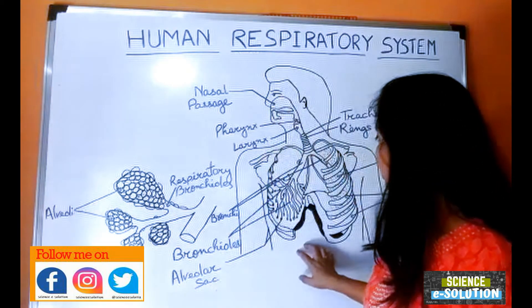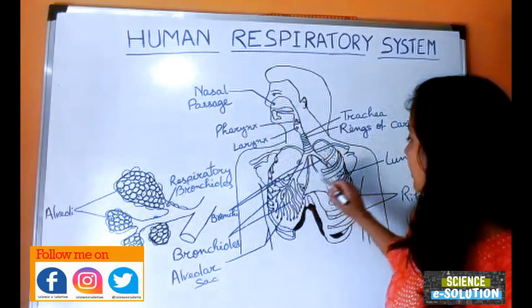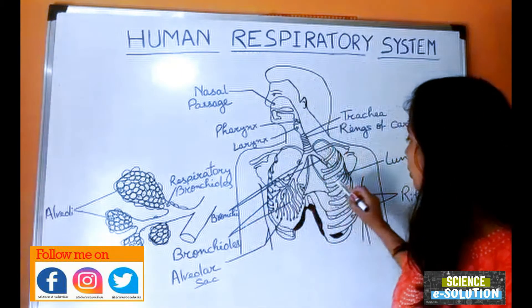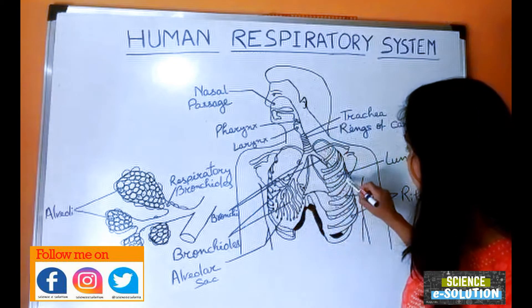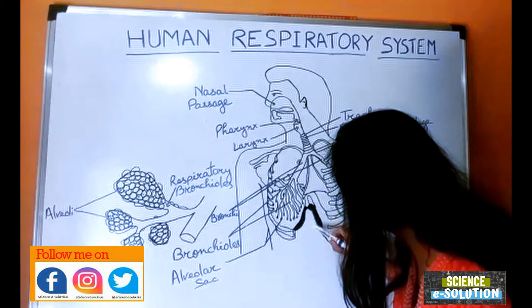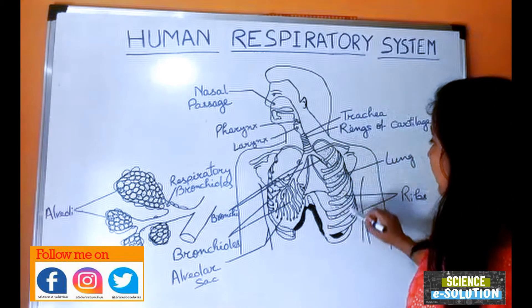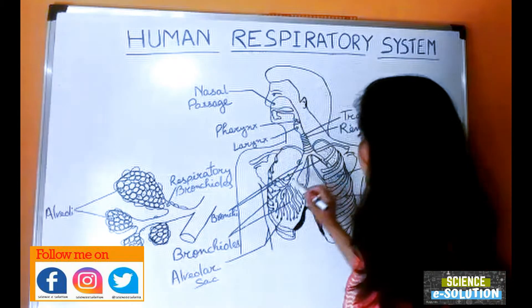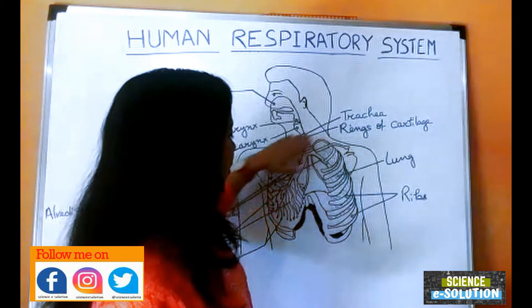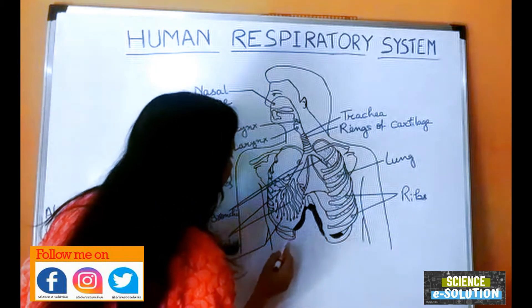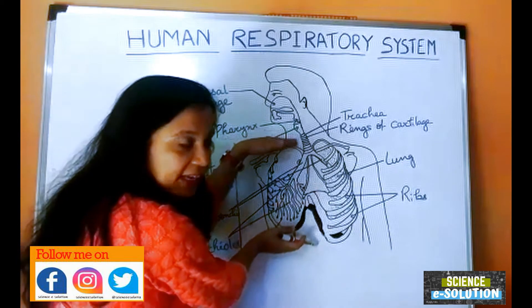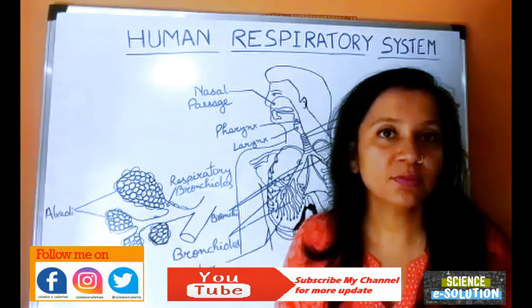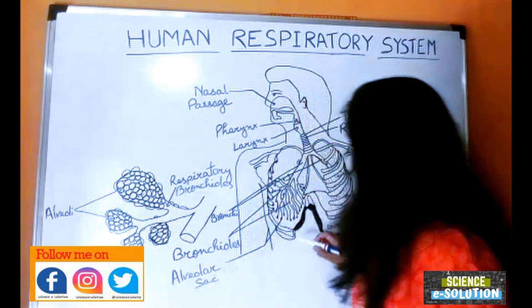The most important organ of the human respiratory system is the lungs. These are two in number and are very delicate organs. Below them lies the diaphragm, and to protect these delicate lungs there are ribs. The lungs are located in the thoracic cavity — above the diaphragm is the thoracic cavity, and below the diaphragm is the abdominal cavity, where the digestive system organs are located.